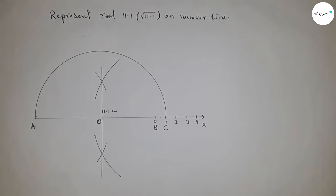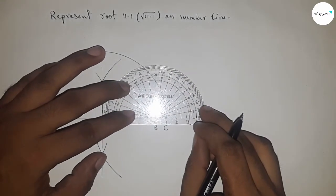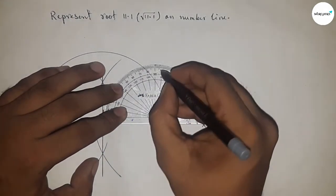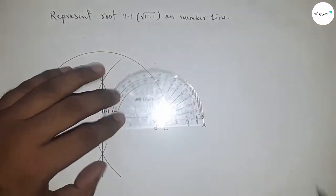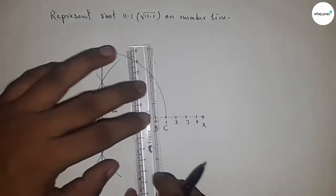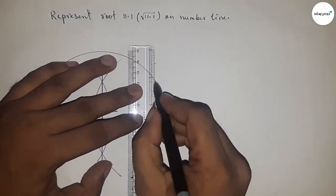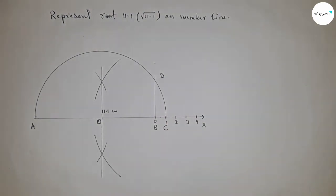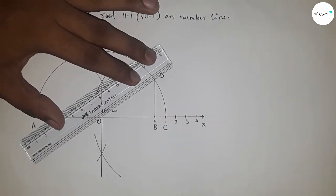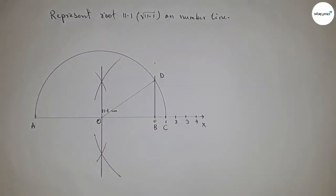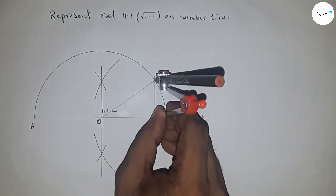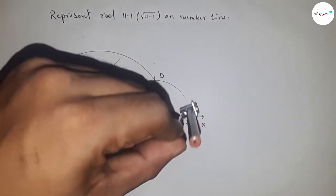Take the length OA and OC to draw a semicircle. Now draw a 90-degree angle at point B using a protractor. Join this to get a perpendicular line. This point is D. Now join O and D.